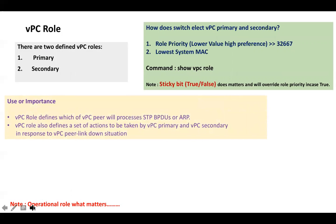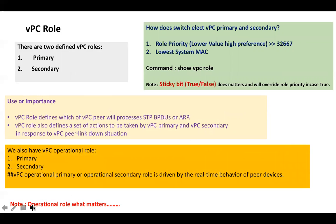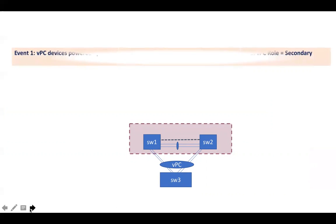Along with VPC role, we have operational role as well — operational primary and operational secondary. In general, VPC role and VPC operational role will be the same, but they can differ. For example, VPC primary can be operational secondary, or VPC secondary can be operational primary. Initially, switch one will be primary as well as operational primary, and switch two will be secondary as well as operational secondary.